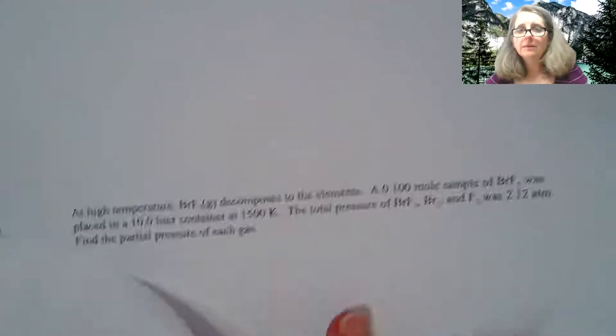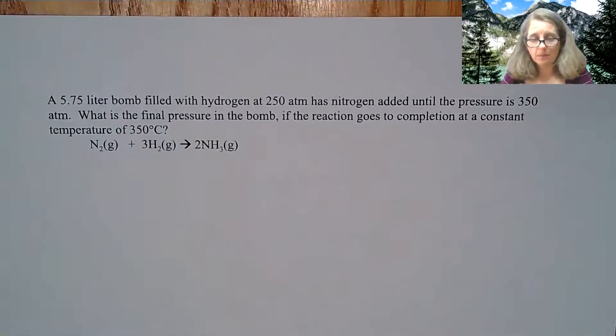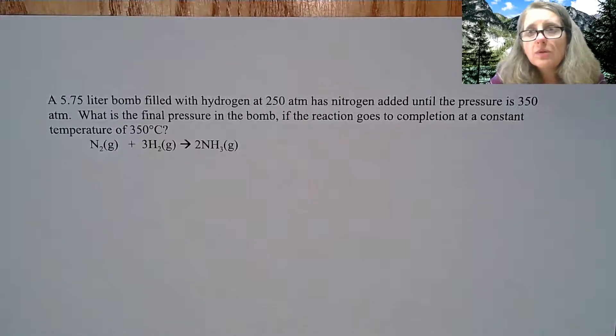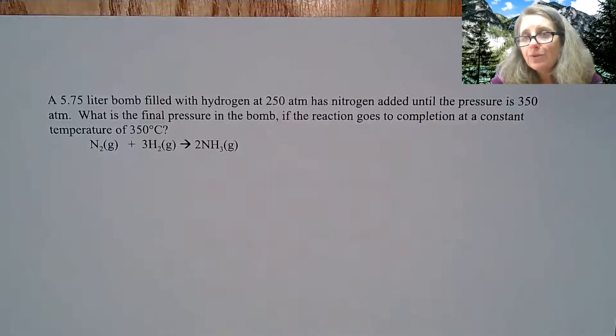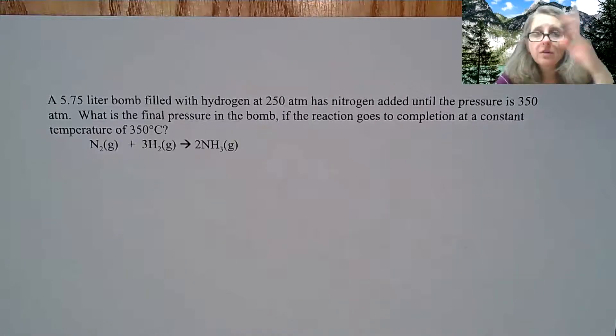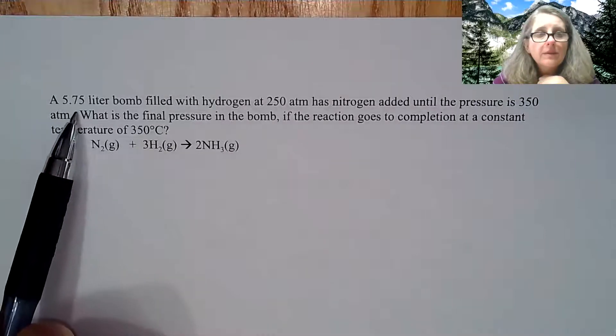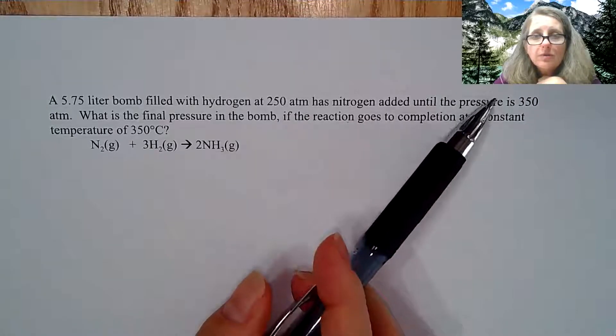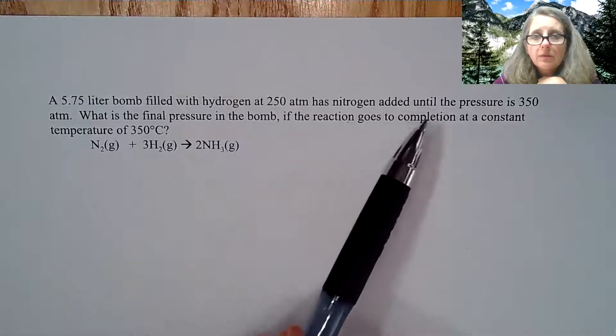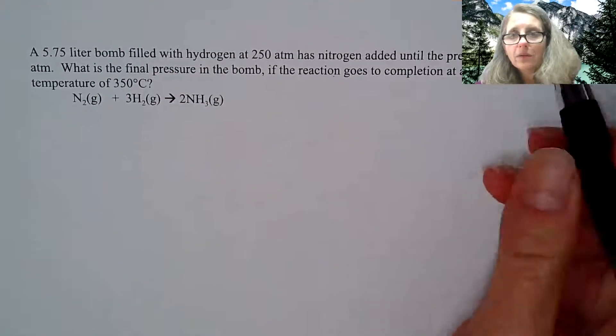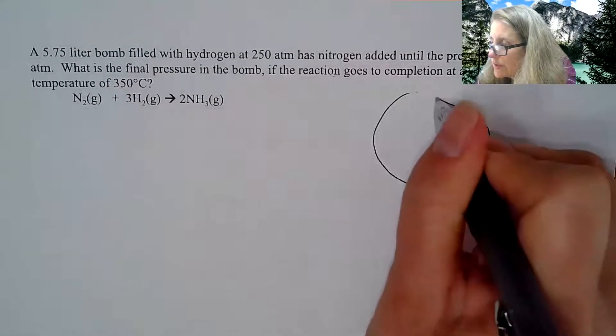Next problem. I put these in the notes to point out that yes, we could always use PV equals nRT and find the number of moles and do calculations from there. But we could also do things in pressure units because pressure is related to number of moles. I have a 5.75 liter bomb filled with hydrogen at 250 atmospheres. Has nitrogen added until the pressure is 350 atmospheres. What is the final pressure in the bomb if the reaction goes to completion at a constant temperature of 350 degrees Celsius?